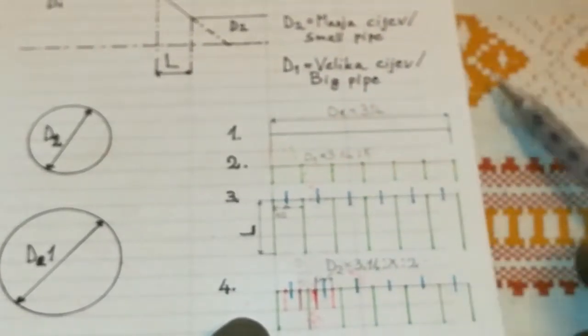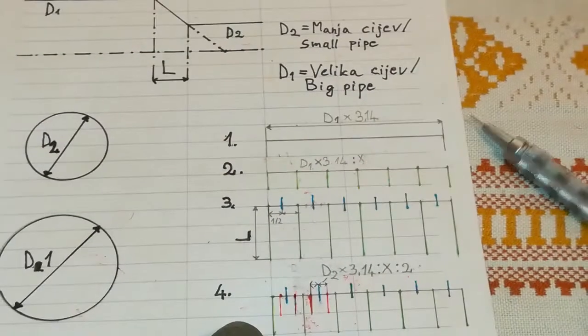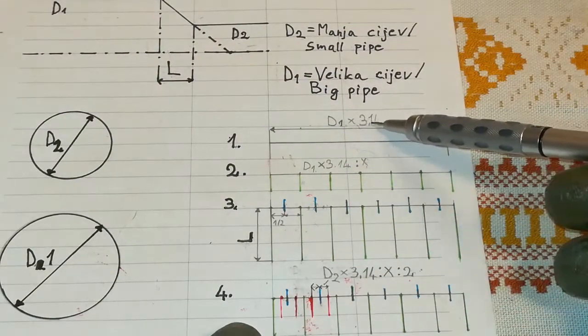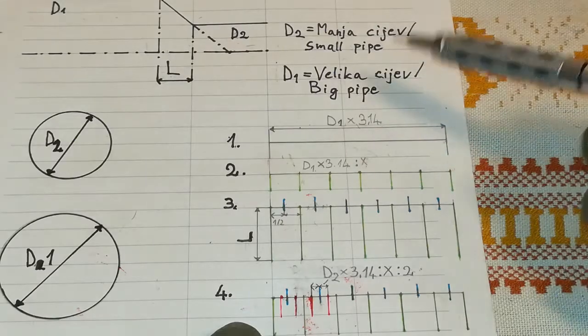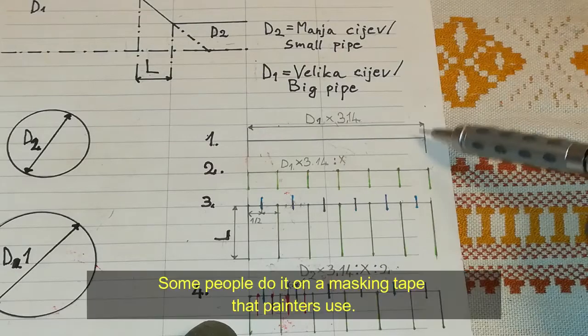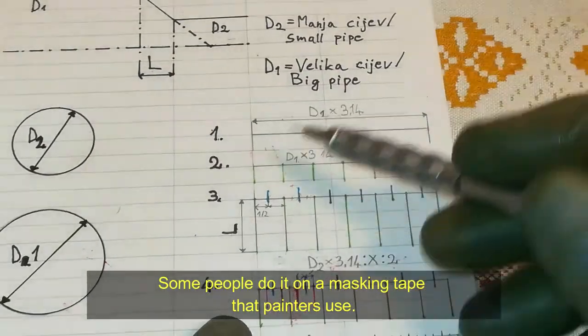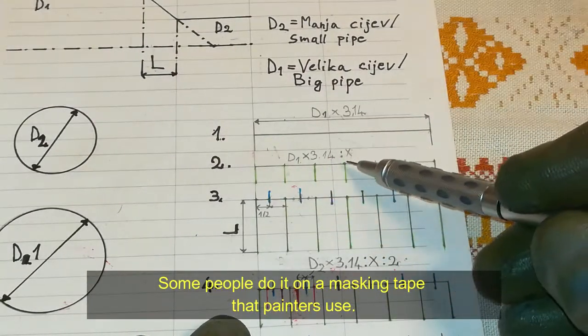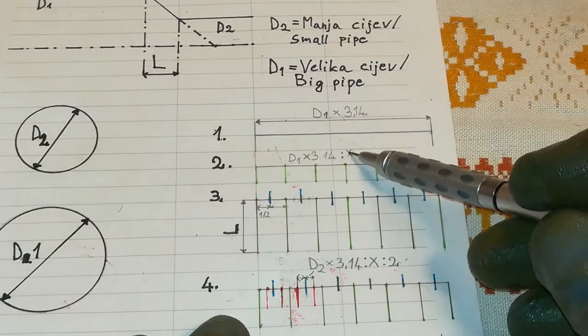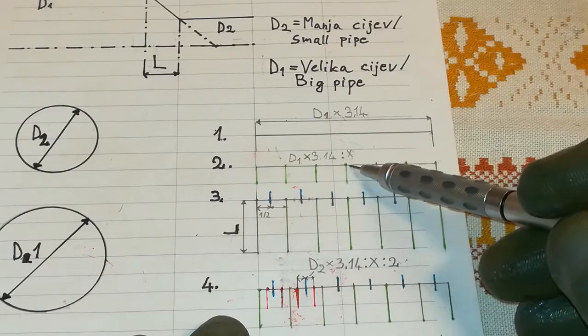Once we know our diameter of the big pipe, we're going to multiply it by 3.14 and then we're going to draw the line on the piece of paper of the same length. After that, we're going to divide that line in number of segments that you want. In this case, it is 6 divisions.